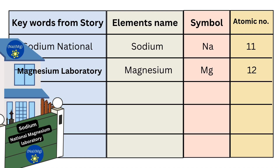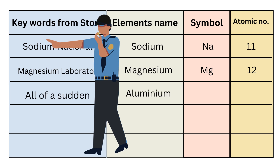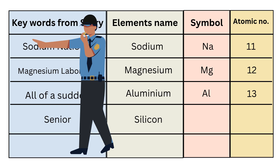After reaching near the Sodium National Magnesium Laboratory, all of a sudden a senior police officer stops the car. So your next key word is 'all of a sudden', from which you can remember the thirteenth element name, that is Aluminium. Symbol is Al, and atomic number is 13. 'Senior' is your next key word, from which you can remember the fourteenth element name, that is Silicon. Symbol is Si, and atomic number is 14.